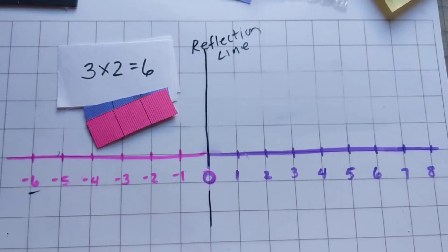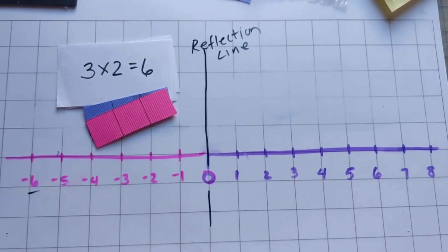I want to show you how to envision why it is that when you multiply two negatives together you end up with a positive number.